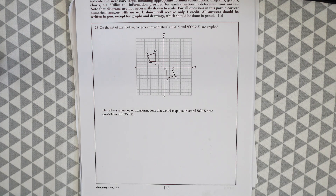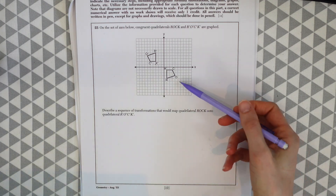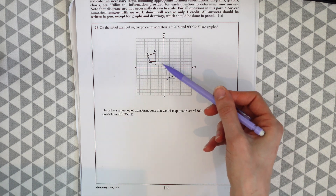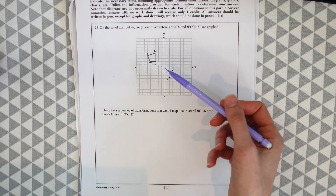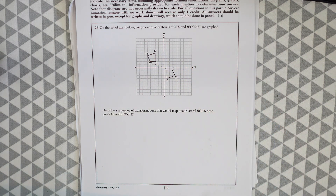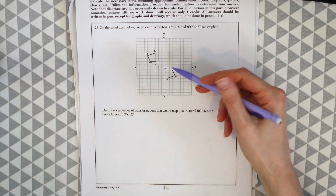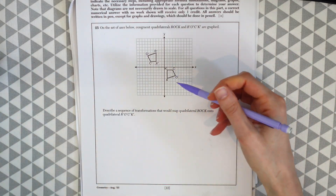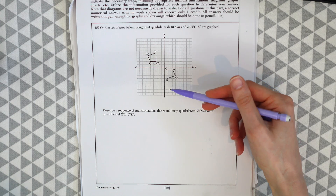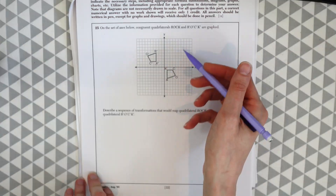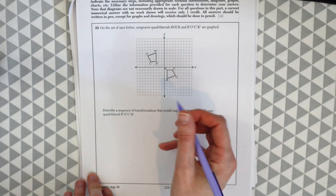So these kinds of questions take some creativity and visualization. We need to imagine we're taking this quadrilateral ROCK over here and transforming it into R prime, O prime, C prime, K prime. So we're going to have to use our imaginations here. The thing I'm noticing is we can take this quadrilateral and flip it onto the x-axis, so if we make a reflection over the x-axis.